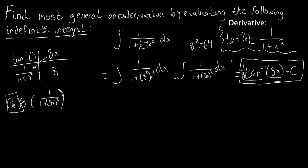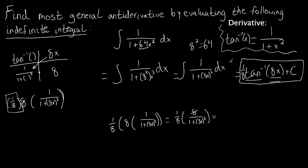Let's verify this with differentiation. We still need the chain rule: tangent inverse differentiates to give 1 over 1 plus the argument squared, and 8x gives us 8. Plugging in, we get the constant 1 over 8 multiplied by 8 times 1 over 1 plus (8x) squared. That's 1/8 times 8 over 1 plus (8x) squared, and since 8 divided by 8 cancels, we're left with 1 over 1 plus 64x squared — which is exactly what we started with.